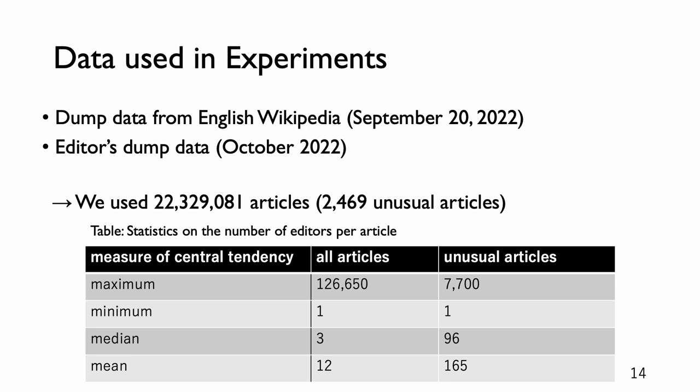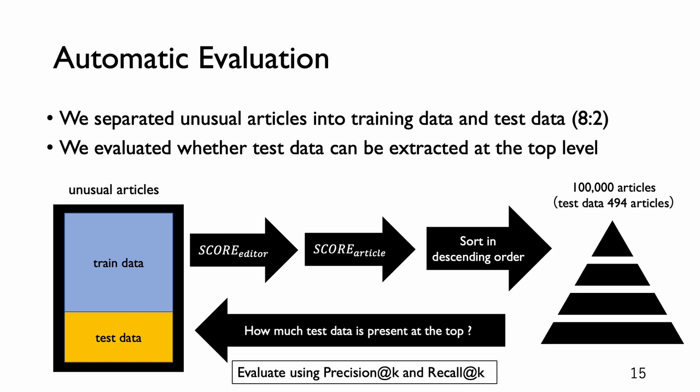We use dump data from English Wikipedia and editors dump data. We show a table of statistics on the number of editors per article. From this table, we can understand the maximum of all articles is very large and the median in all articles is very small. We conducted an experiment to evaluate score_editor and score_article automatically. We separated unusual articles into training data and test data. For the training data, we calculated the article's importance score and generated a ranking of articles that could be added to the unusual articles section. On the basis of precision at k and recall at k, we evaluated the degree to which there were test data in the top k cases.